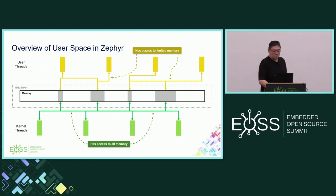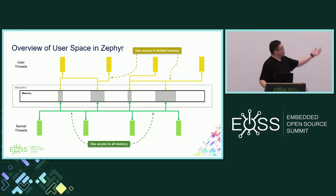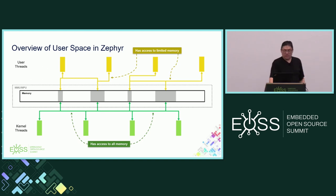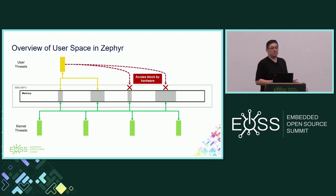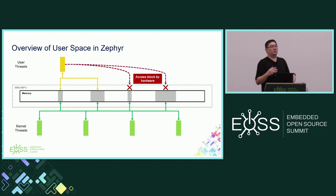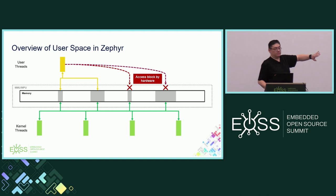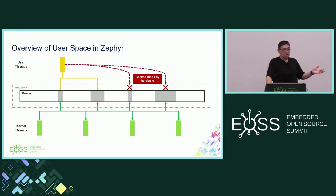For user threads, you basically grant them access to certain memory regions. For example, thread A can access memory region A and B, and thread B can access region B. When a user thread tries to access a memory region it doesn't have permission for, the hardware blocks the access, creates a fault — mostly a page fault — and the user thread will be terminated. By default, a user thread has access only to its text region, read-only data region, and its own thread stack.